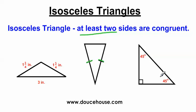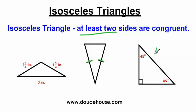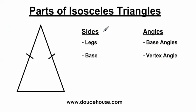This triangle right here is a special kind of isosceles triangle — it's an isosceles right triangle, also known as a 45-45-90 triangle. It's a special right triangle that we'll mention later on in the school year, so this is something to pay attention to on the very last slide.